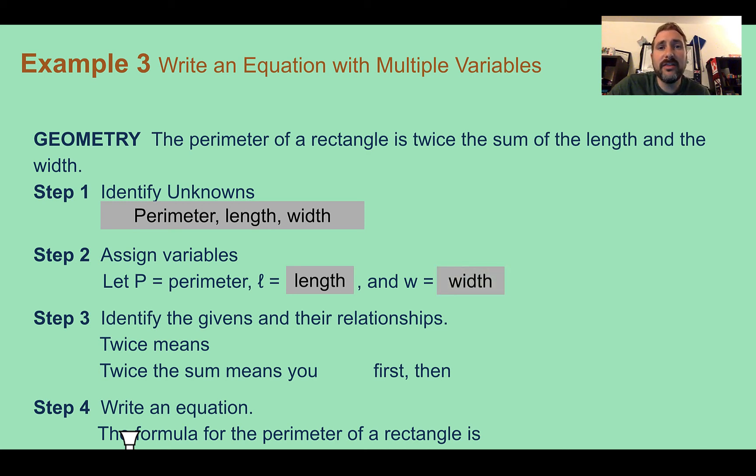So now let's identify the relationships. So twice implies two and that we're multiplying. But twice the sum means that you're going to add them first, then multiply.